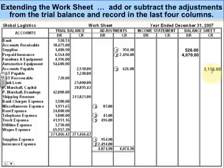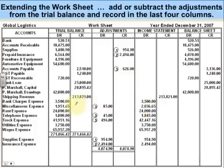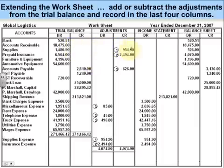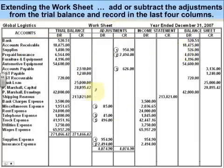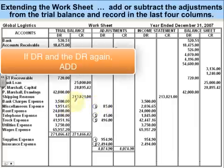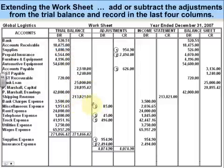So we are extending our worksheet. Let's take a quick look — I quickly threw all the numbers in there. Bank wasn't affected because there was nothing in the adjustment column, so it stayed the same. Accounts receivable wasn't affected either. Supplies was affected because we adjusted it — there was a debit then a credit, so we subtracted it to get this amount. If there's something in the adjustment column, you need to do some math. Miscellaneous expense: there was $1,951.65 as a debit, then we debited it again for $85, so we add those together. When they're both debits, add them. I'm putting it on the income statement because expenses go on the income statement. When I added them together, this is the number I got.